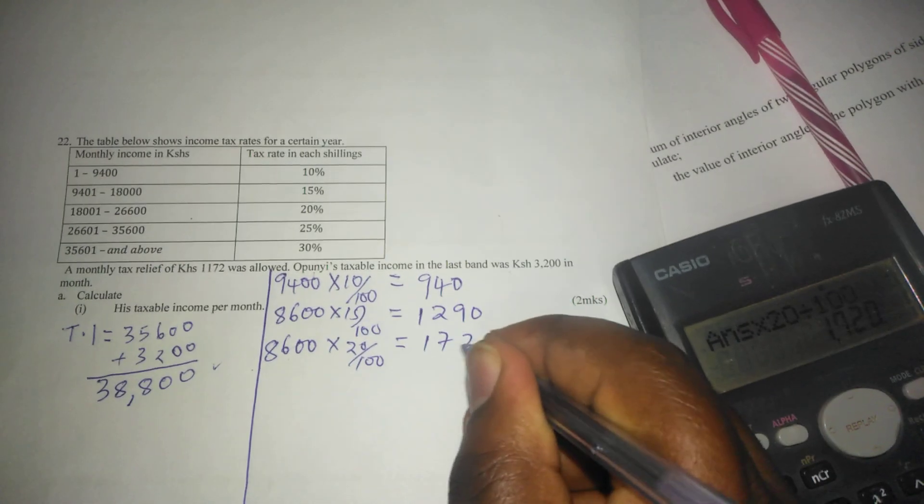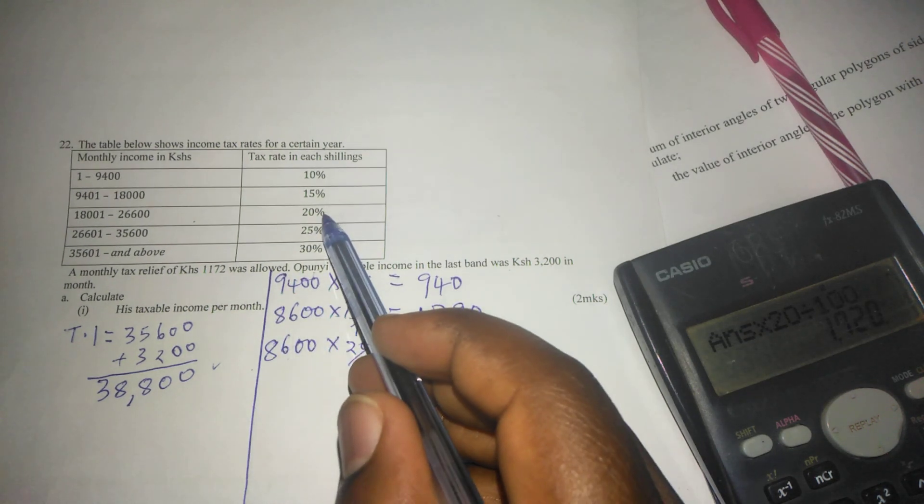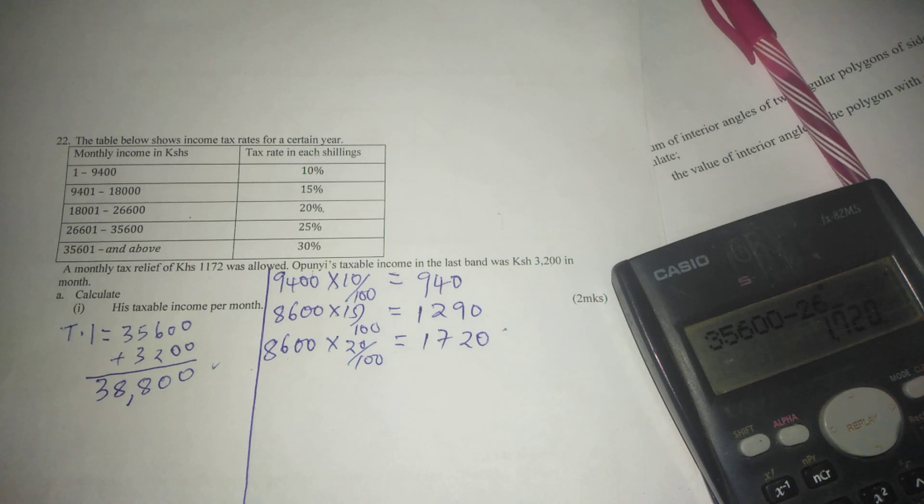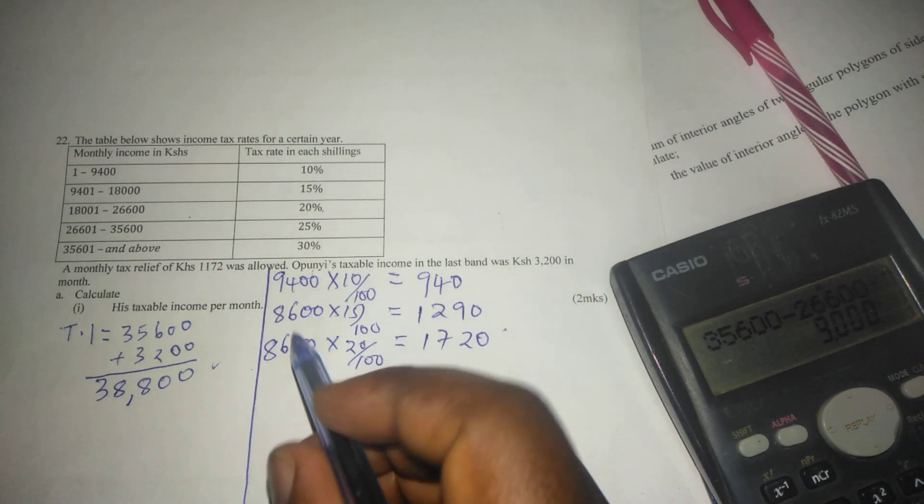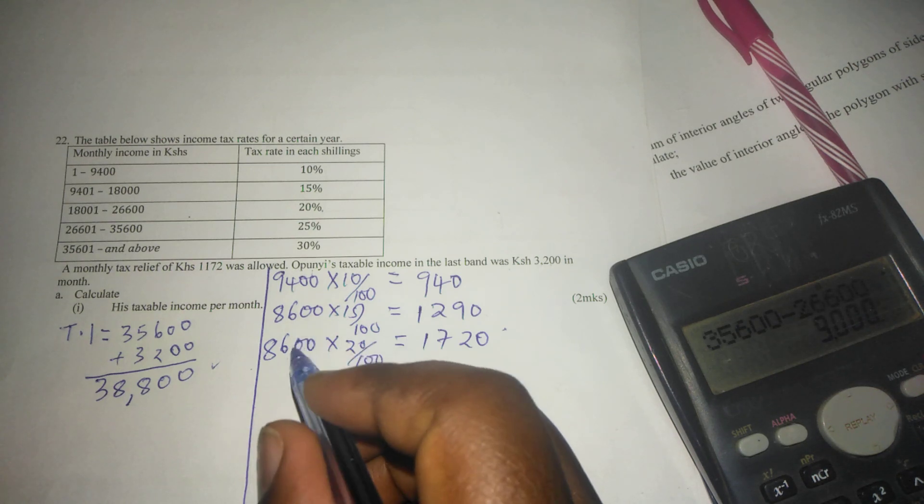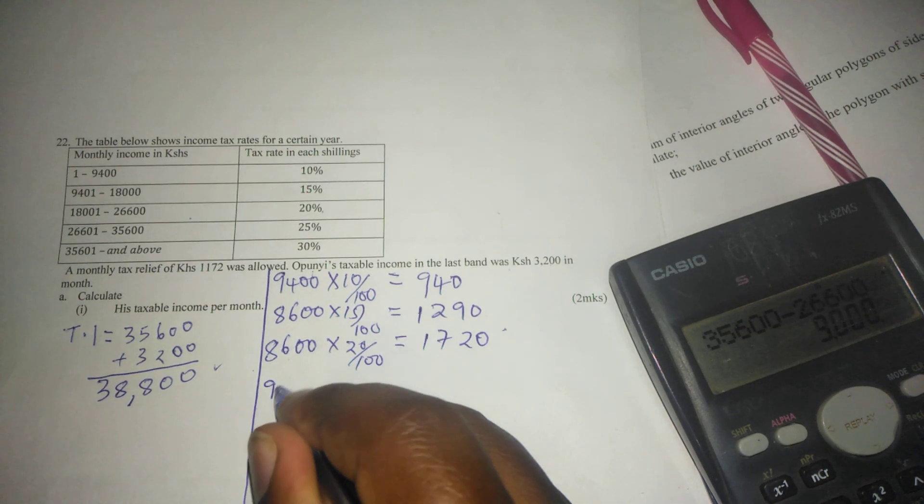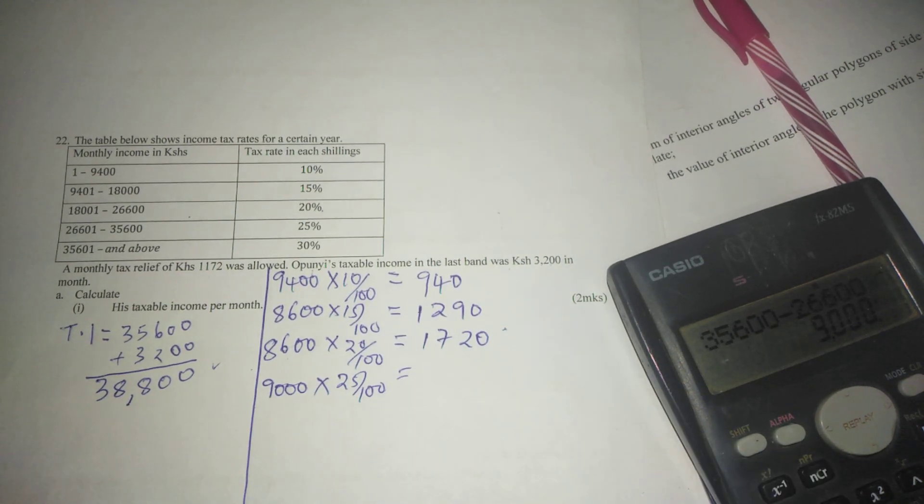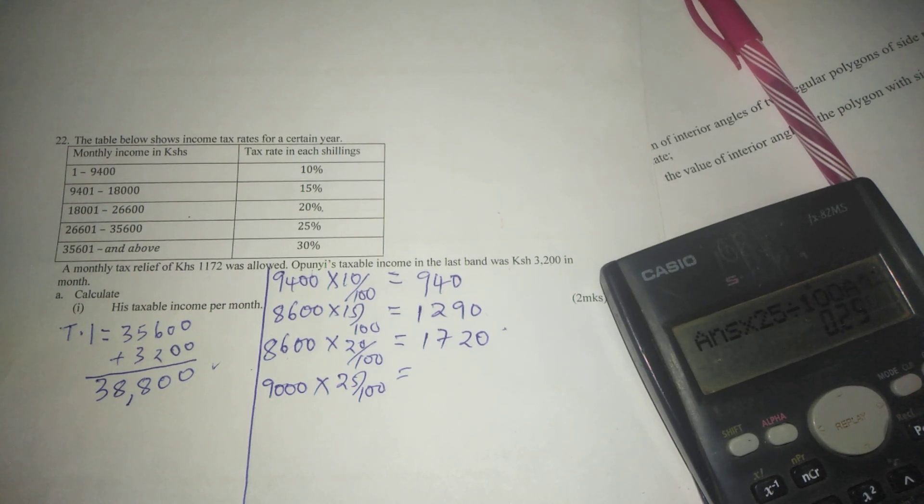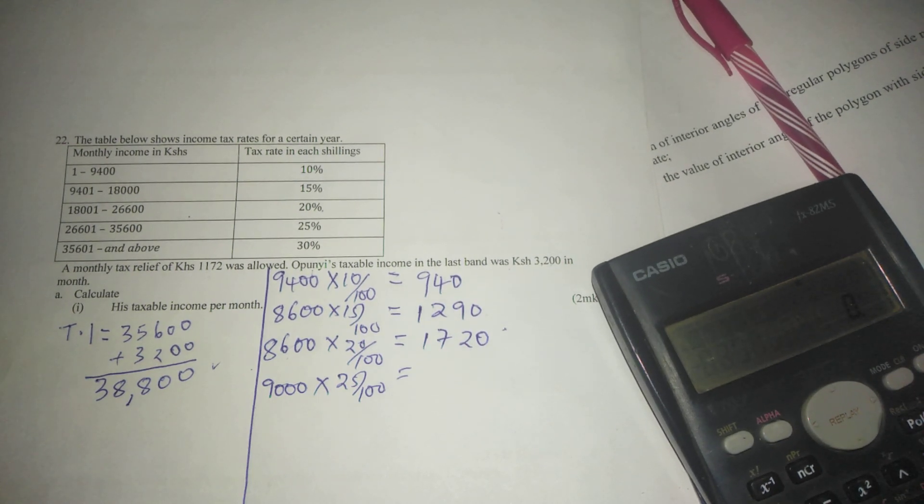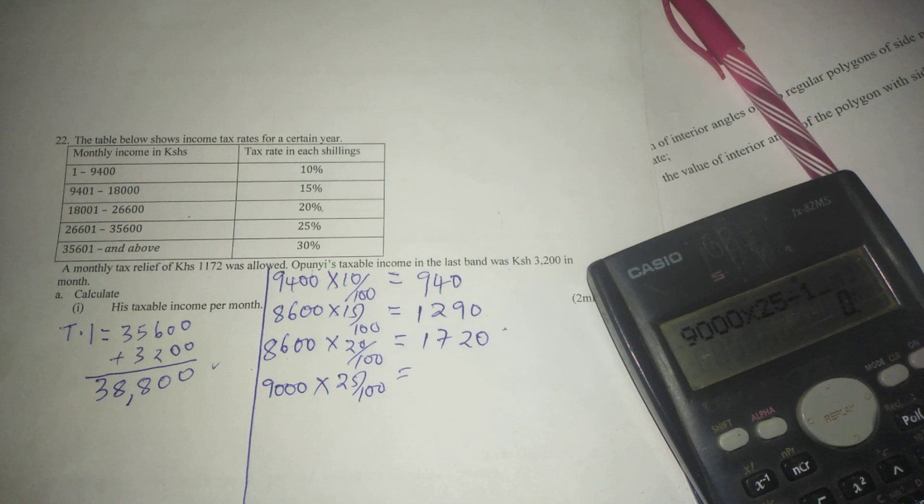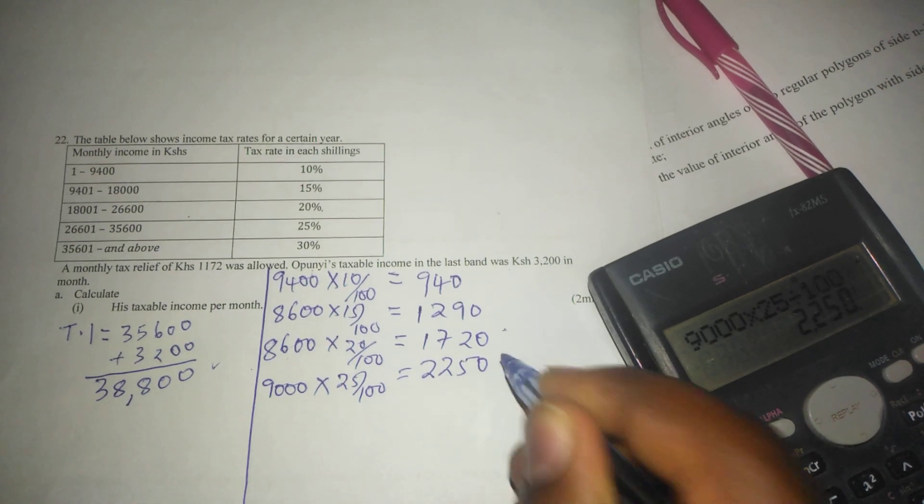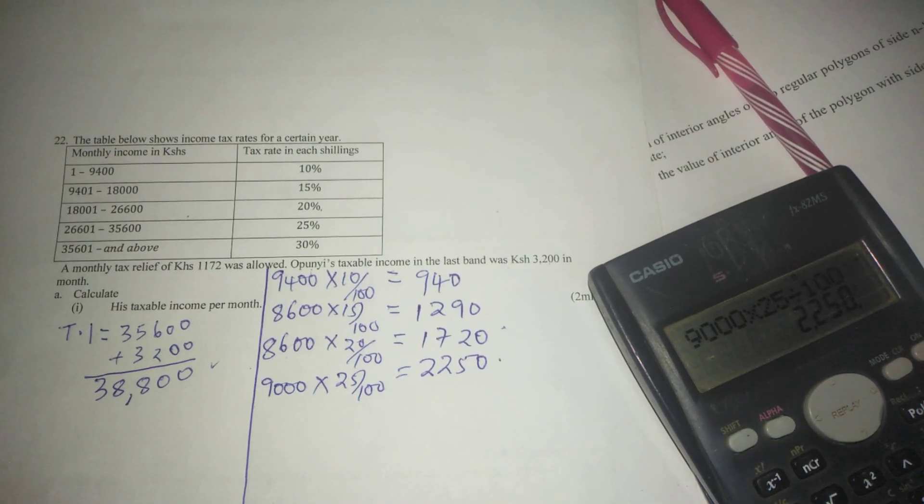Then in the fourth bracket we'll be subtracting 35,600 and 26,600, getting 9,000. So that 9,000 is taxed at the rate of 25 percent. It's 9,000 times 25 percent, which gives us 2,250.